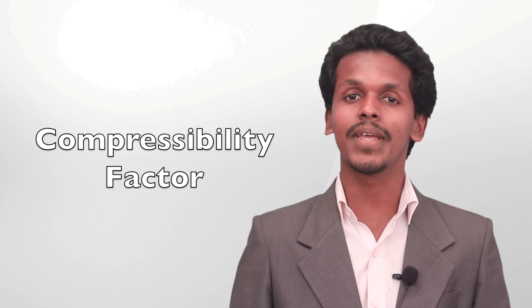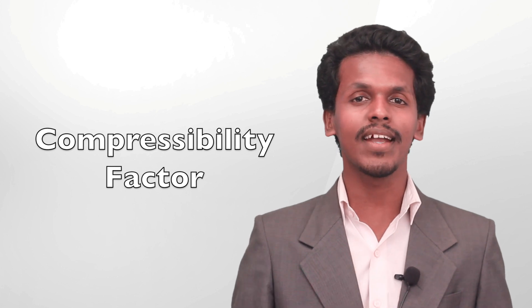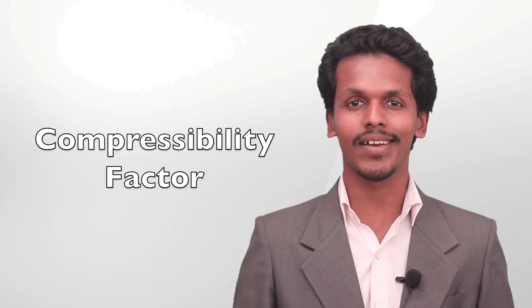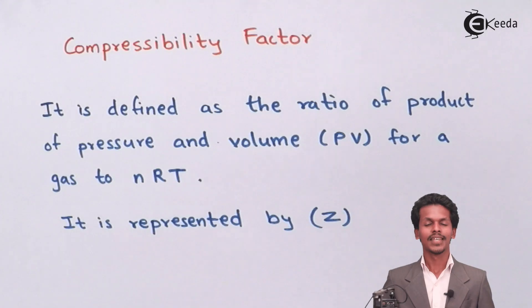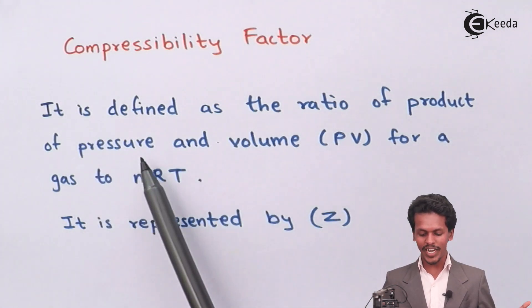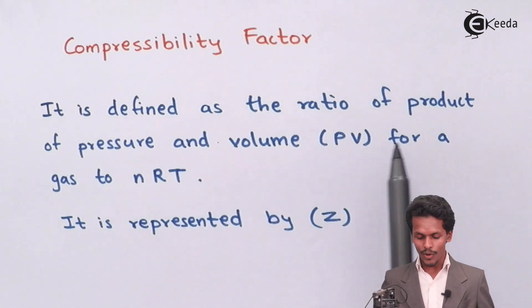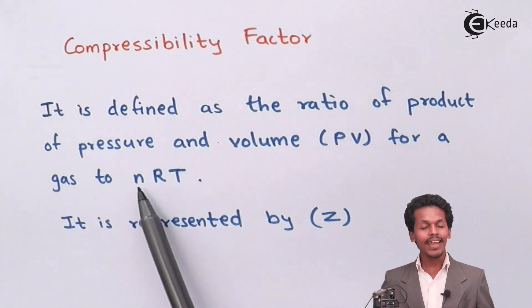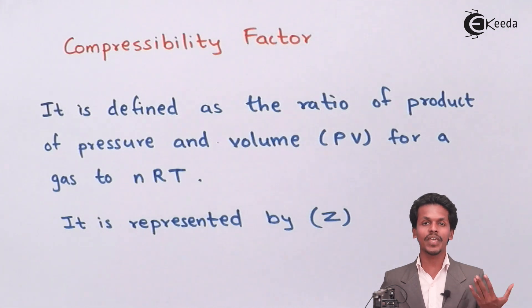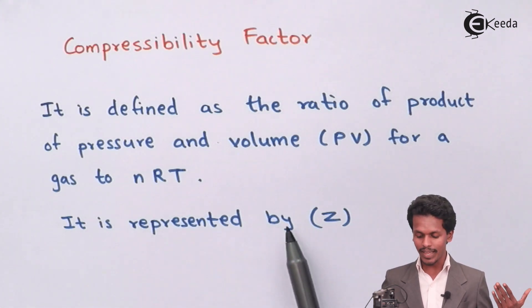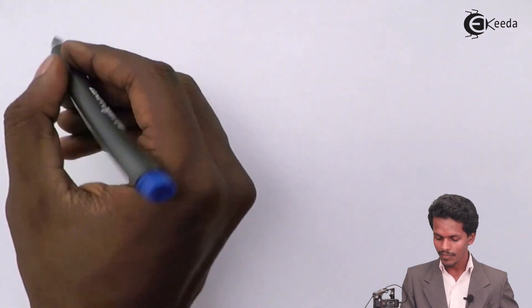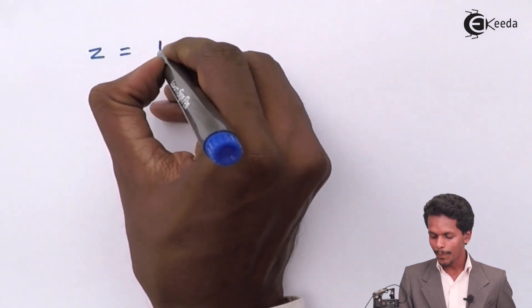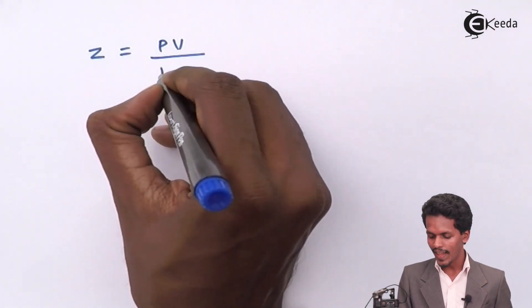There are some gases that were not being compressible. So now, based on that, we are going to talk about what compressibility factors are. Talking about the compressibility factor, it is defined as the ratio of the product of pressure and volume, that is PV, for a gas to nRT. It is a ratio of PV and nRT, represented by the symbol Z. So we can write it as Z is equal to PV divided by nRT.